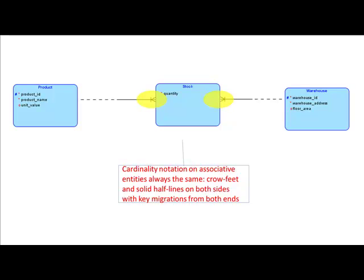Whenever you've got a many-to-many relationship, two things you have to remember. One: you have to create an associative entity to model this — even if the many-to-many relationship doesn't seem to have any attributes, still create an associative entity. And have a one-to-many relationship from both of the other entities to the associative entity, so you're going to have crowfeet. And the associative entity must participate in the relationship, so the line is going to be solid — solid lines on either side. This is standard. Whenever you see many-to-many, this is what you're going to do.